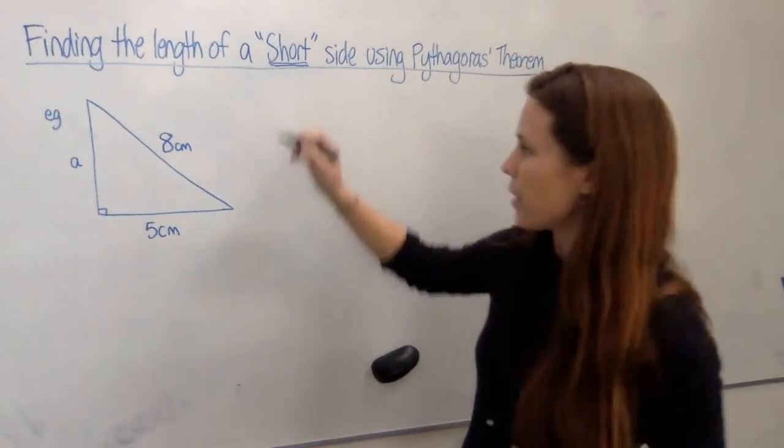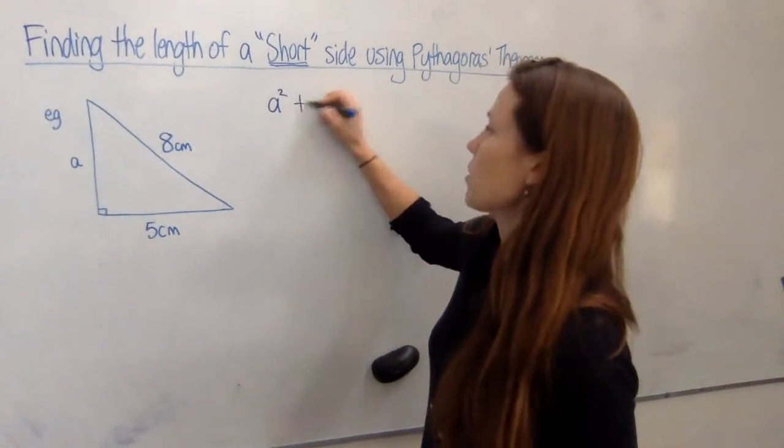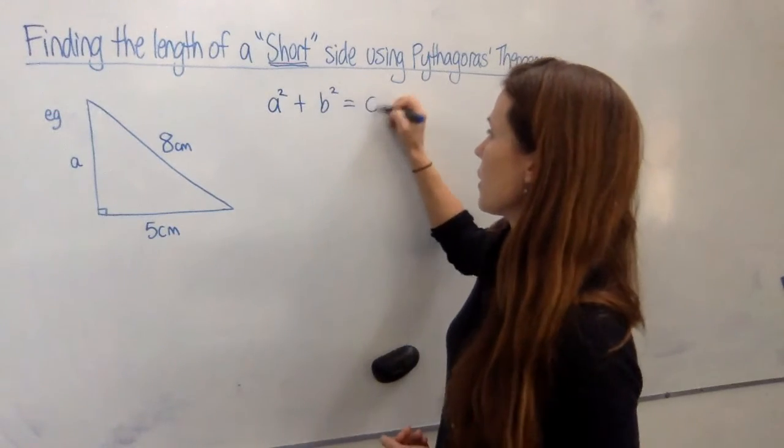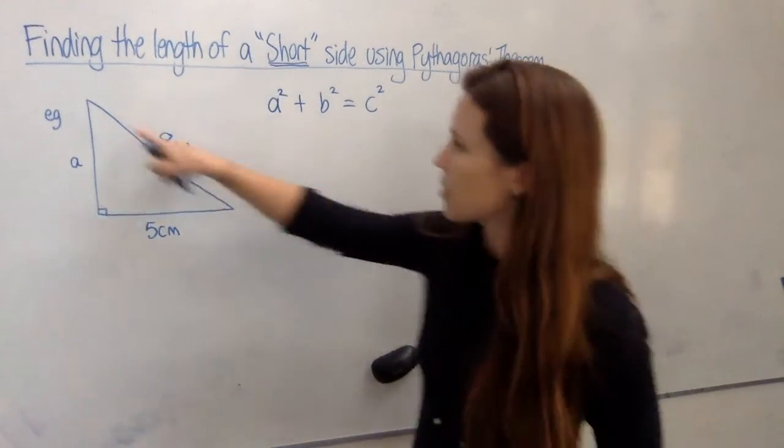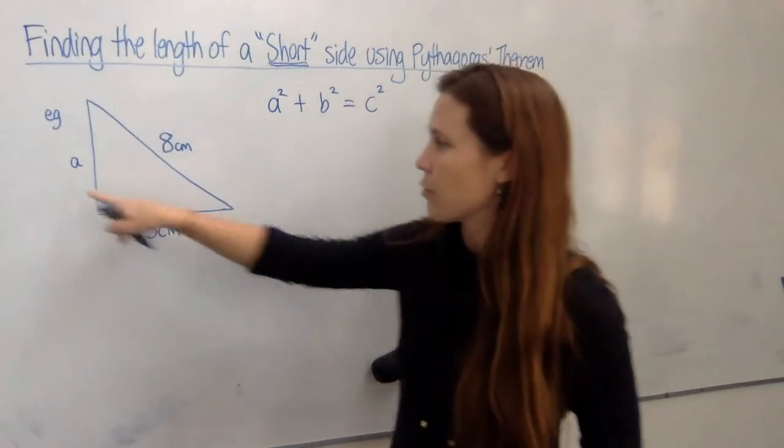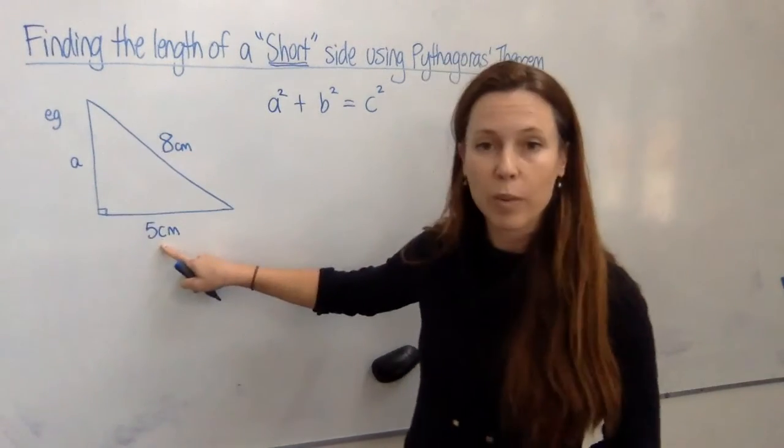Now first step, write the equation every time: a² + b² = c². And then consider which of your a's, b's and c's. Now c has to be the hypotenuse, so if we label this a, then this one will be b.